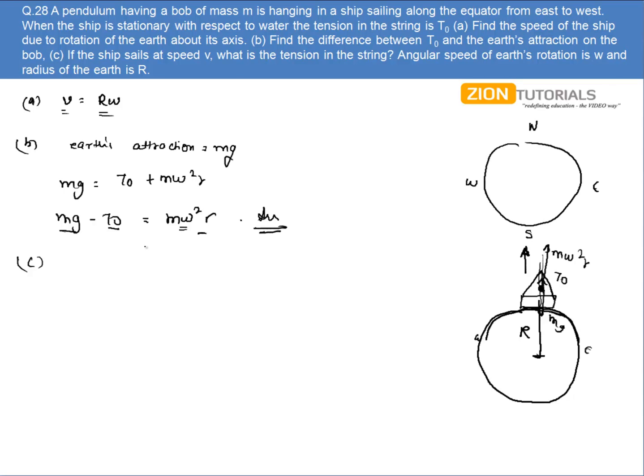In part C, if the ship sails at a speed v, what is the tension in the string? Now if the ship is sailing at a speed v and the earth is also rotating with an omega.